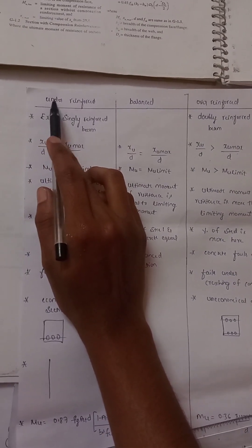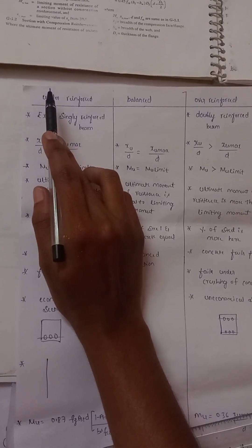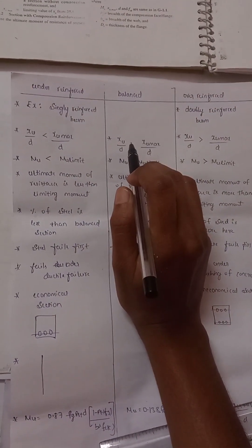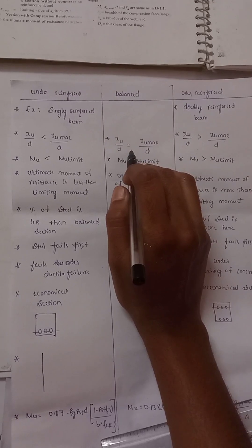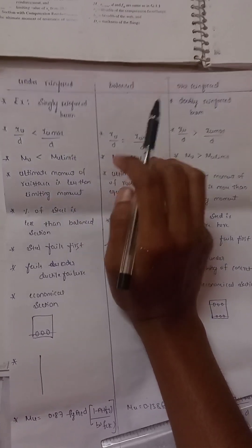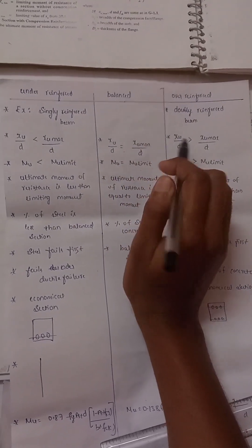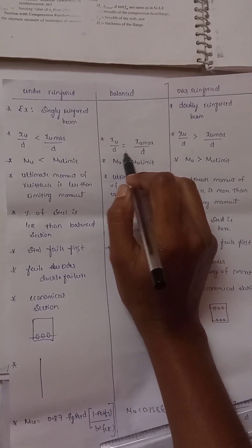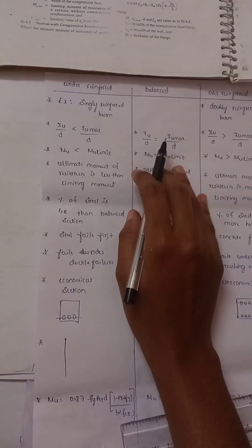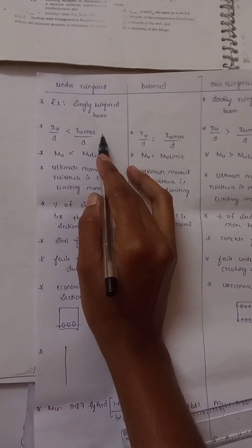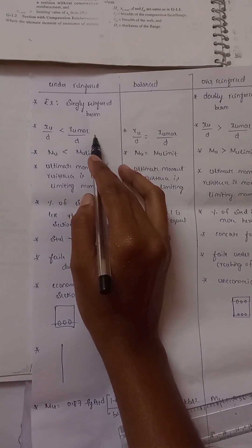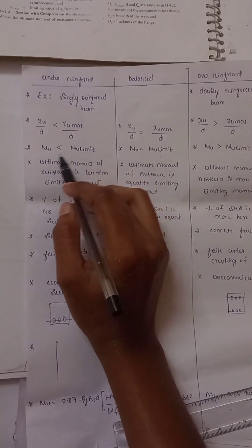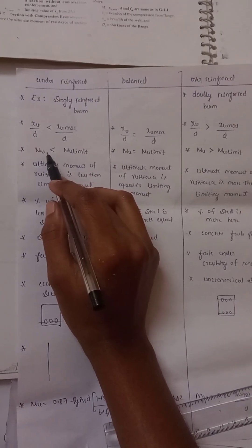For a balanced section, xu/d is equal to xu_max/d. So balanced means the ratio equals the code book limiting value — this is the condition that separates under-reinforced from over-reinforced design.